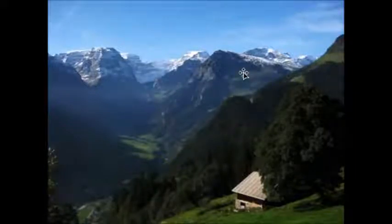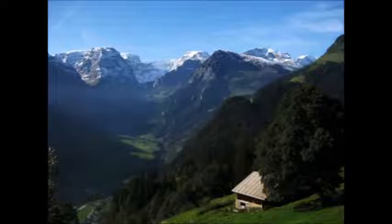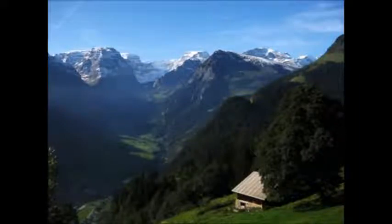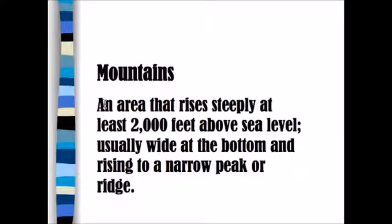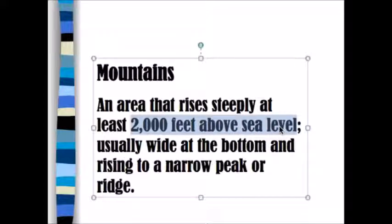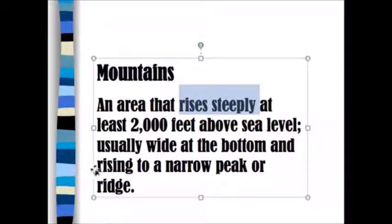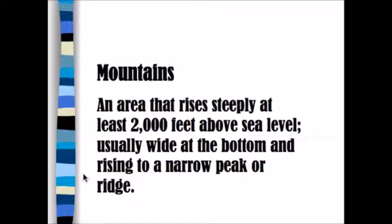Look at these — they're so large. What are they? Yes, you guessed it, they're mountains — a mountain range, actually, because there are multiple ones here. A mountain rises steeply at least two thousand feet above sea level, usually wide at the bottom and rising to a narrow peak or ridge. Probably want to highlight 'rises steeply' and 'two thousand feet above sea level.'